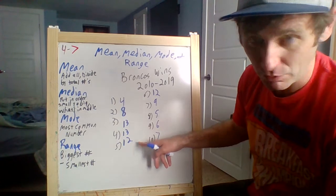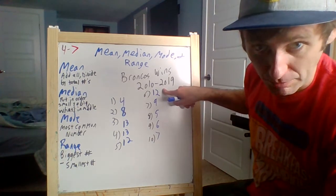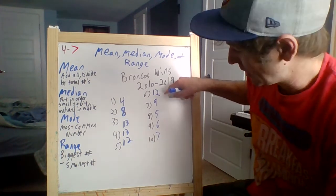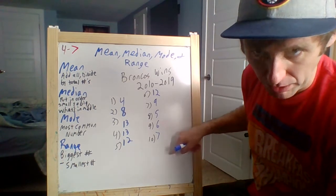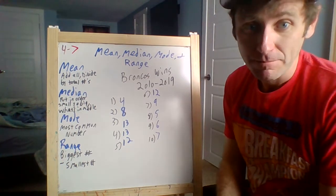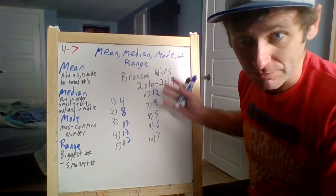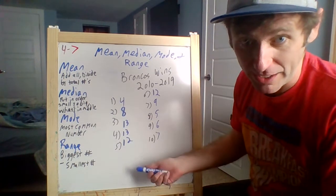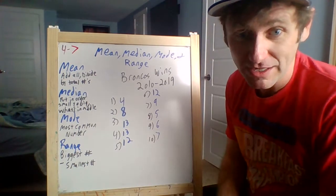You can see starts not so great—4, 8—oh, Peyton Manning comes to town: 13, 13, 12, 12. They win the Super Bowl, Peyton Manning retires, blah blah blah, not so great. But overall, pretty awesome decade for the Broncos with a lot of wins. They made the Super Bowl twice. So we're gonna figure out the exact math for this now.